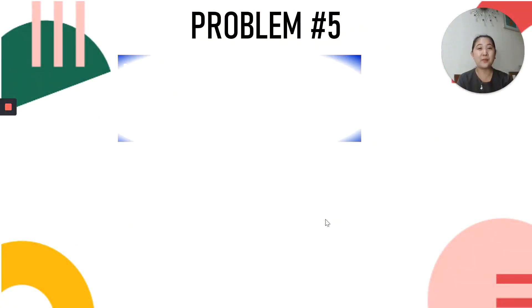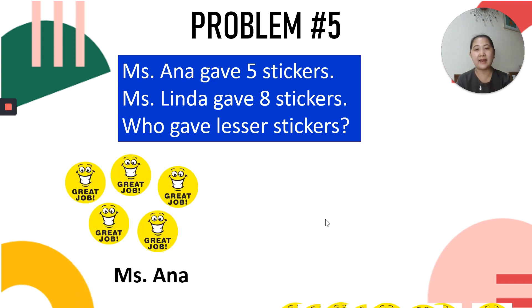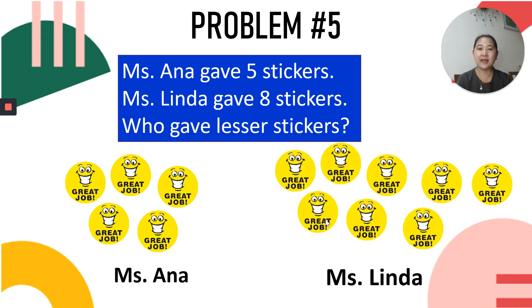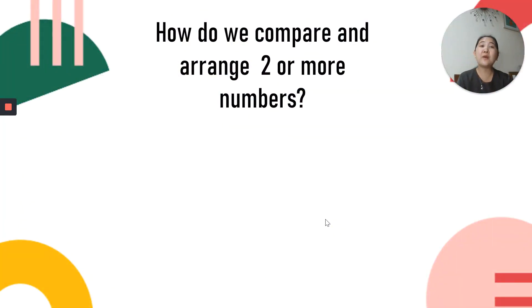Now, let's have another problem. Miss Anna gave 5 stickers. Miss Linda gave 8 stickers. Who gave lesser stickers? This time, who gave lesser stickers? Miss Anna. And that's Miss Linda. Who gave lesser, fewer? That's right. Miss Anna gave. Miss Linda has greater. Miss Anna has lesser stickers. Very good.